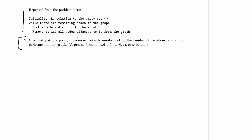We're supposed to give and justify a good non-asymptotic lower bound on the number of iterations of the loop performed on any graph. This is saying it's supposed to be a precise formula, not an o, little o, theta, omega, or little omega bound. So we actually have to compute how many iterations this will run.